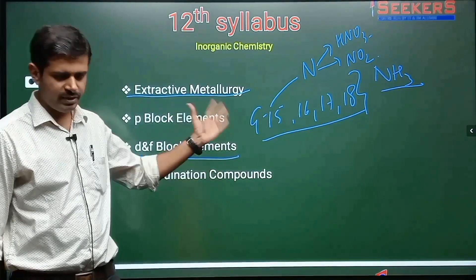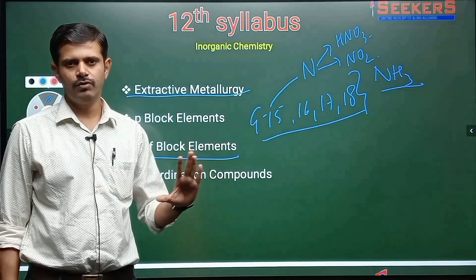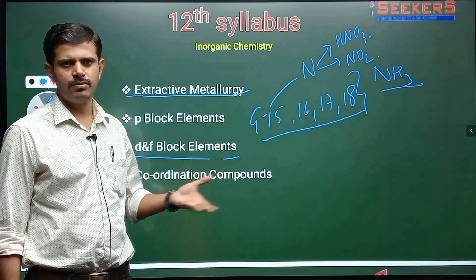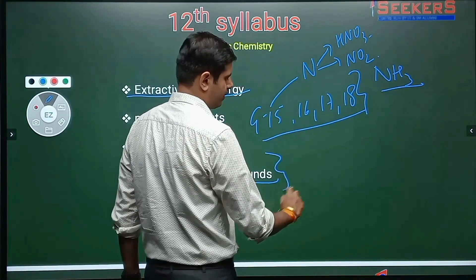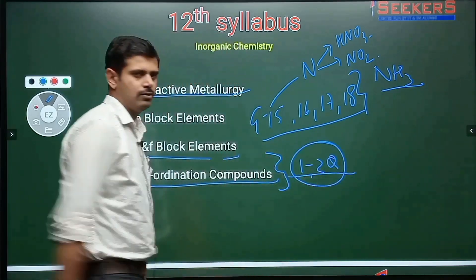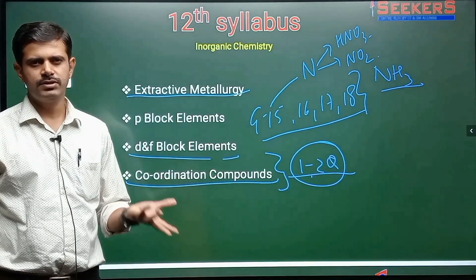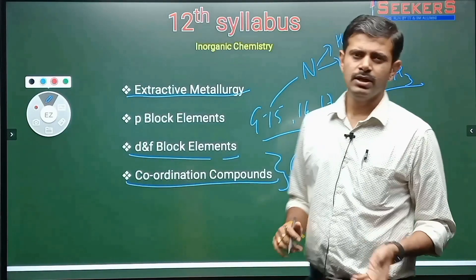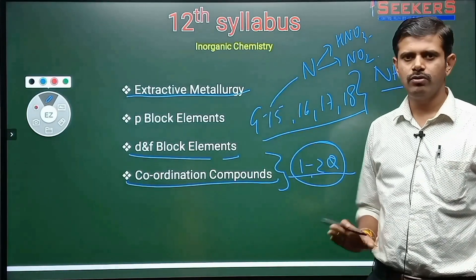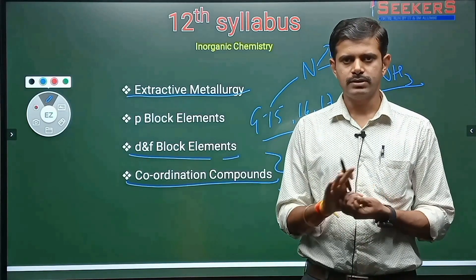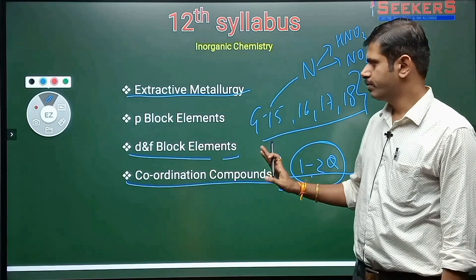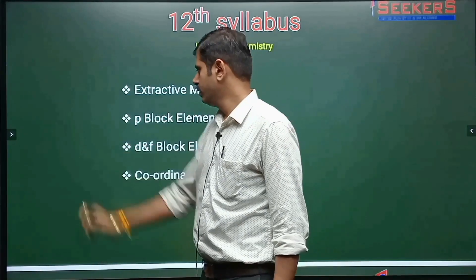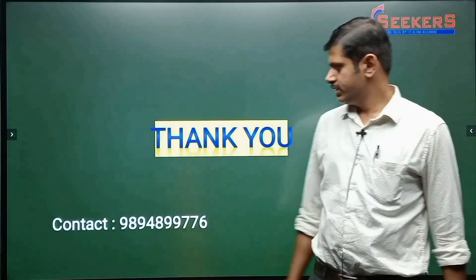Then d and f block elements — same properties discussed: melting point, boiling point, atomic size, and lanthanide and actinide contraction. Finally, coordination chemistry is a very important chapter — at least one to two questions are asked every year. We'll see coordination compounds, primary and secondary valency, isomers, optical isomers. This is the complete brief outlook of the NEET crash course covering class 11 and 12 combined, in the sequence we'll be following.